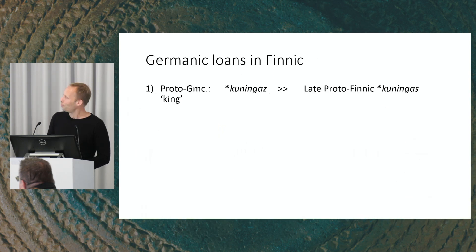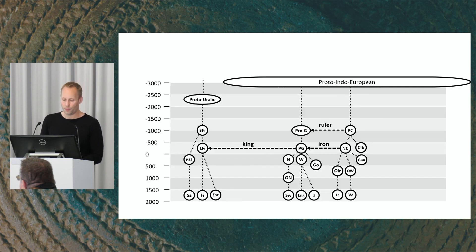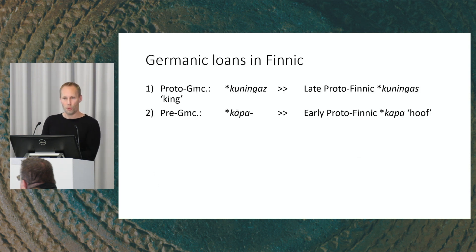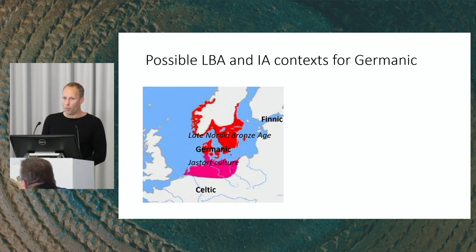You can also look at Uralic, which also exists in northern Europe, because Germanic donated a lot of words to Finnic. The word for king in Germanic was adopted by Finnic speakers, probably in the Iron Age, so Germanic was in contact with Celtic but also with Finnic in the north. There is also an earlier layer — before Germanic became 'degenerate' — including the word for hoof, borrowed into Finnic. In this way you can delimit the Proto-Germanic speech community in time and space.